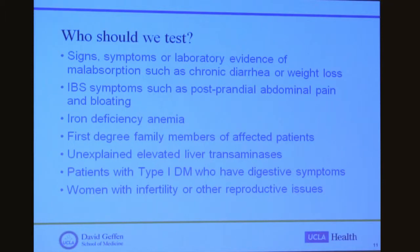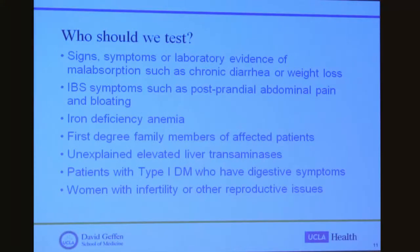In 2013, the American College of Gastroenterology put forth guidelines outlining which patients we should screen for celiac disease. Anyone with signs, symptoms, or laboratory evidence of malabsorption such as chronic diarrhea or weight loss should absolutely be tested. Patients with IBS symptoms such as postprandial abdominal pain, bloating, or non-specific diarrhea should be tested, and it is cost-effective to do so. Anyone with iron deficiency anemia should be screened, as should first-degree family members of affected patients, patients with unexplained elevated liver transaminases, those with type 1 diabetes who have digestive symptoms, and women with infertility or other reproductive issues.